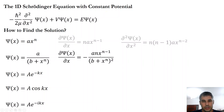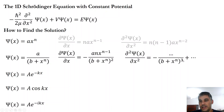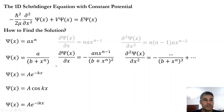For the rational function, we get a semi-complicated fraction for the first derivative, and the second derivative introduces more terms. The denominator appears elevated to the power of 3 in one term while the original term has the binomial elevated to the power of 1. If you try to replace this in the Schrödinger equation it will not work either.